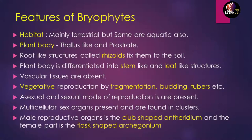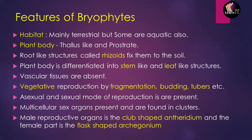Now let us look at the features of Bryophytes. Regarding habitat, all bryophytes are essentially terrestrial — they live on land — but some exceptions are aquatic in nature. Regarding the plant body, they have a thallus-like structure and a prostrate form. A thallus is a plant body not differentiated into stem and leaves and lacks true roots or a vascular system. A structure called rhizoid helps these bryophytes get fixed onto the soil.